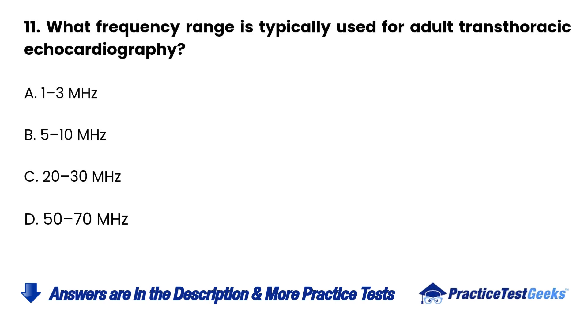Question 11. What frequency range is typically used for adult transthoracic echocardiography? A. 1–3 MHz. B. 5–10 MHz.